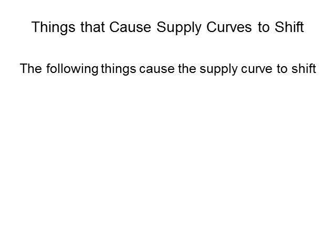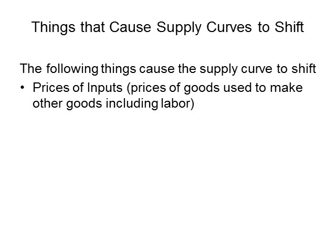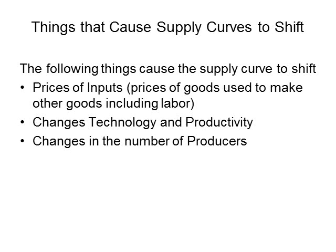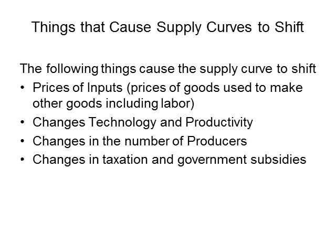The following things cause the supply curve to shift: prices of inputs — that is, the prices of goods used to make other goods, including labor — changes in technology and productivity, changes in the number of producers, changes in taxation and government subsidies, and changes in the exchange rate.